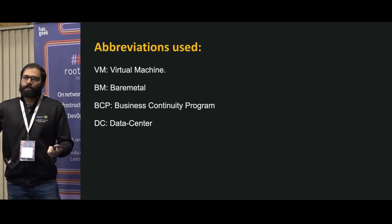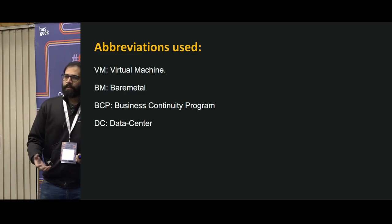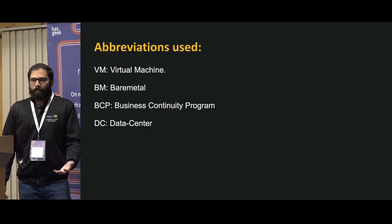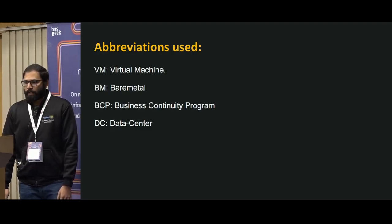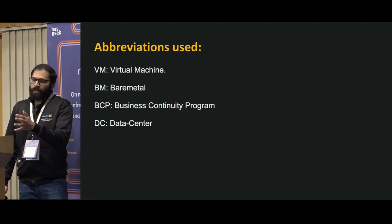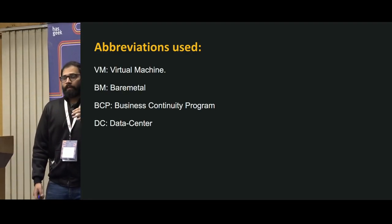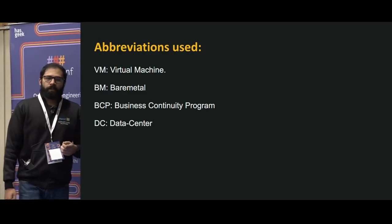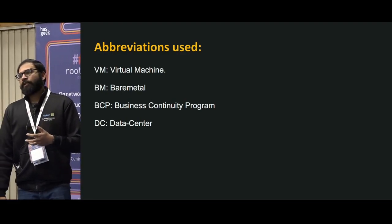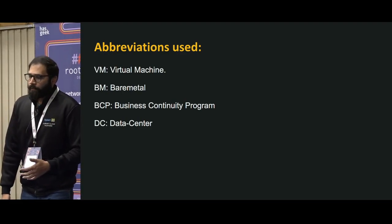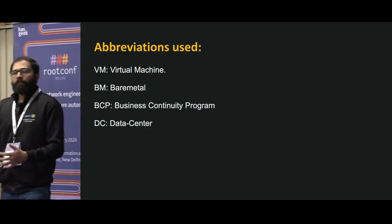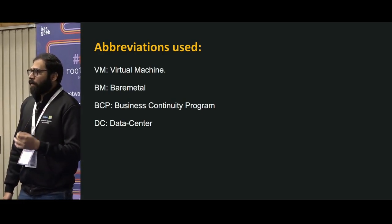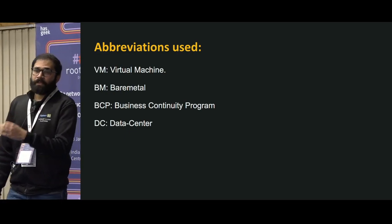There are a few abbreviations I'll be using: VM is for virtual machine, BM is bare metal, and DC is data center. BCP — Business Continuity Program — is the program under which this product was developed. The aim of BCP is to make sure the business is running no matter what. Even if one data center goes down, we have to make sure customers are able to place orders.